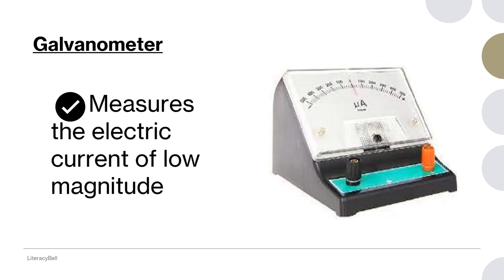The next device is galvanometer. Galvanometer is an instrument used to measure the electric current of low magnitude. It has derived its name from the Italian researcher Luigi Galvani. Hence it has got its name galvanometer.